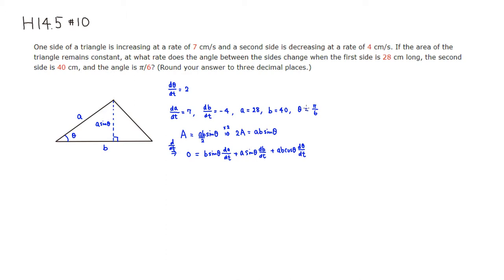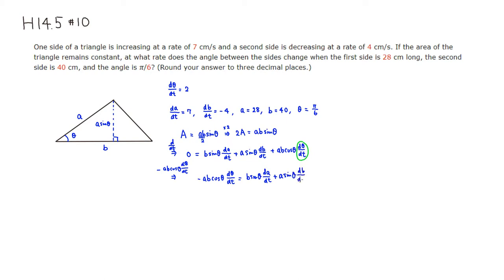We want to find d theta over dt, so solving for it: move the a·b·cosine(theta)·(d theta/dt) term to the left side, giving negative a·b·cosine(theta)·(d theta/dt) = b·sine(theta)·(da/dt) + a·sine(theta)·(db/dt). Then divide through by negative a·b·cosine(theta).